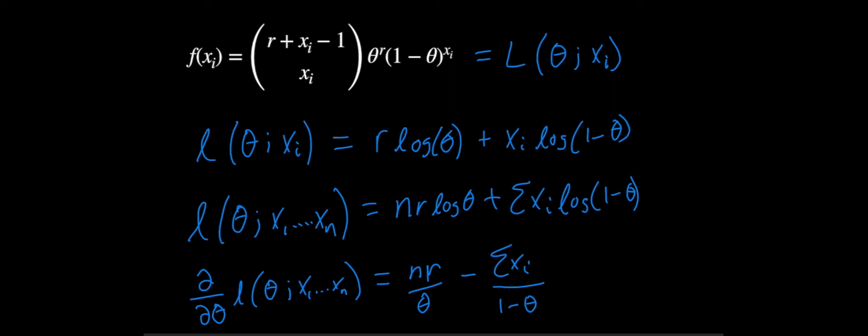So we're going to take this, and we're going to want to set it equal to 0, and solve for theta. So we'll do it on the next page here. So we'll rewrite this. So we have n r over theta minus the sum of x i over 1 minus theta is equal to 0.